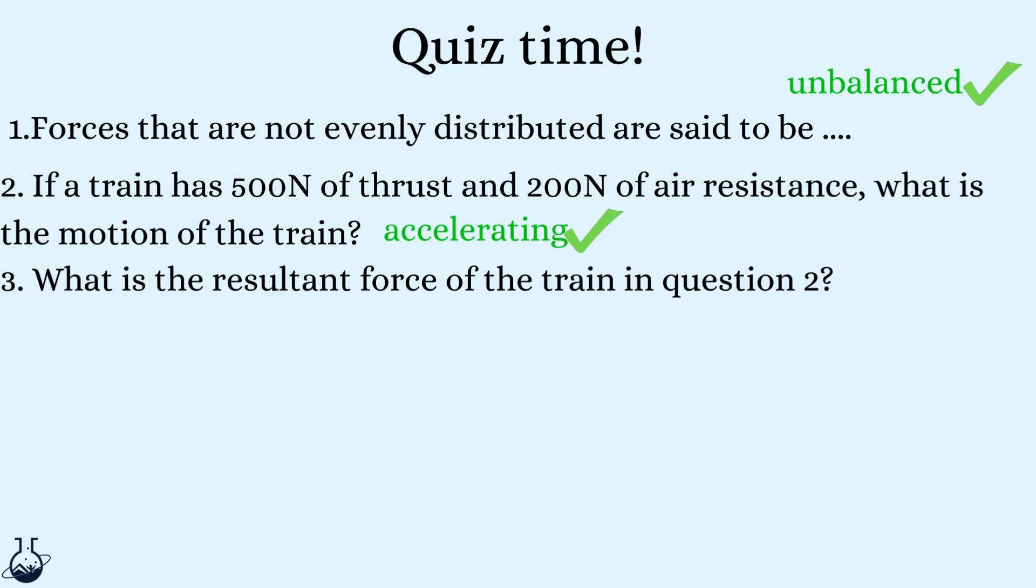Question three. What is the resultant force of the train in question two? Remember to do the big take away small number. So do 500 take away 200 to give you a resultant force of 300 newtons.